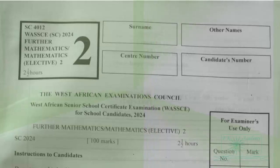West African senior secondary school certificate examination, we have the Further Mathematics 2024 paper. Here we are going to look at paper 2 this time, question number 4. So what is question number 4 saying? Question number 4 is on